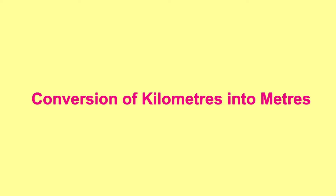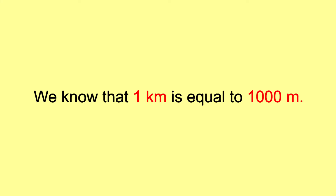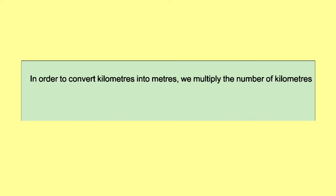Conversion of kilometers into meters. We know that 1 kilometer is equal to 1000 meters. In order to convert kilometers into meters, we multiply the number of kilometers by 1,000.